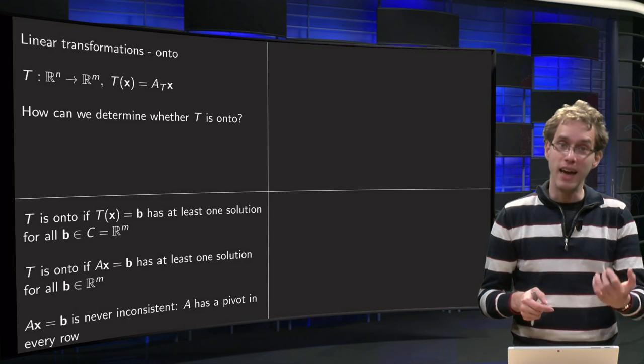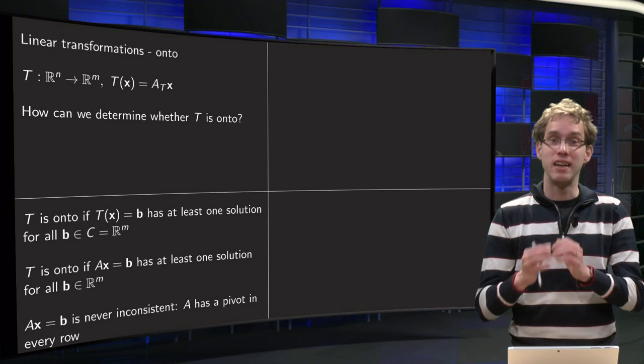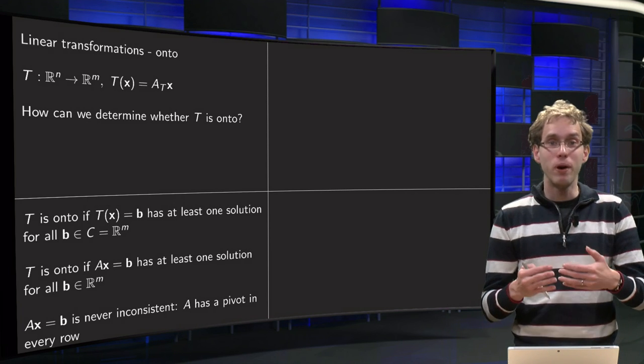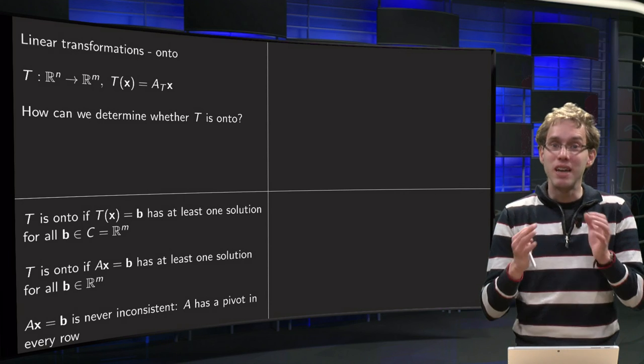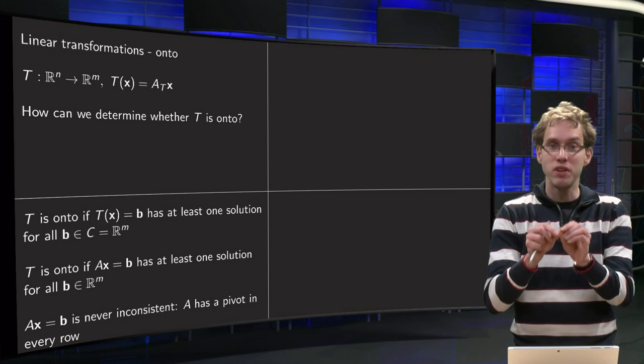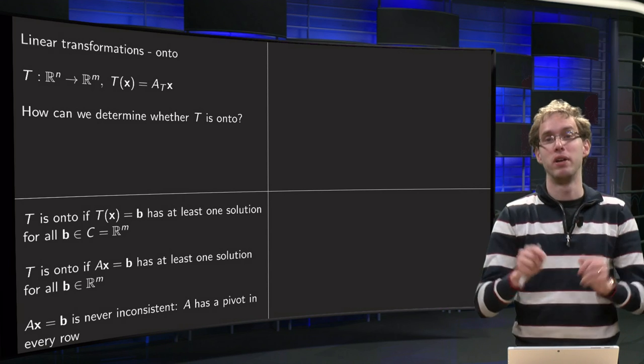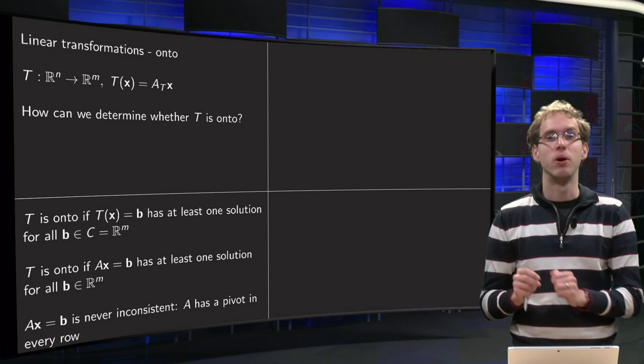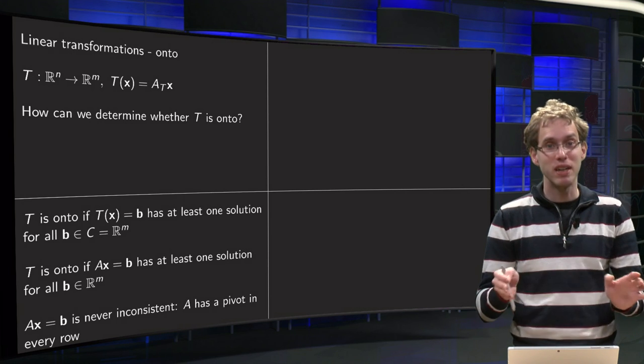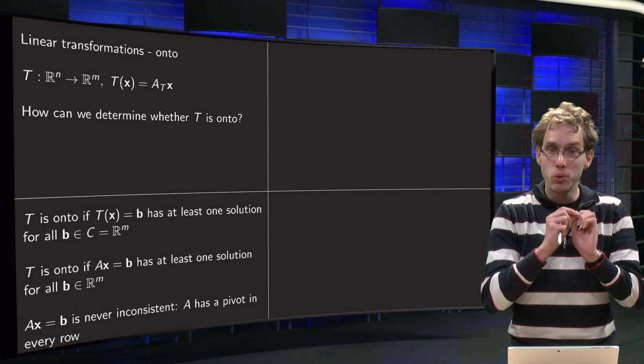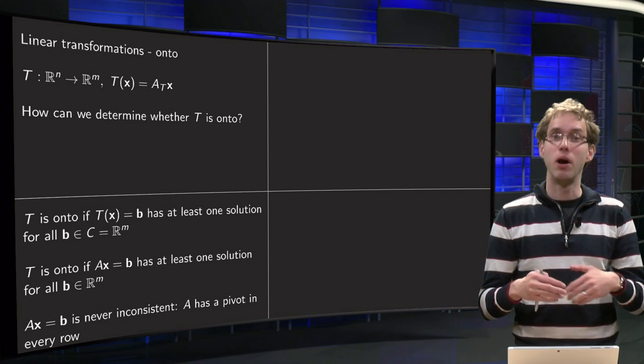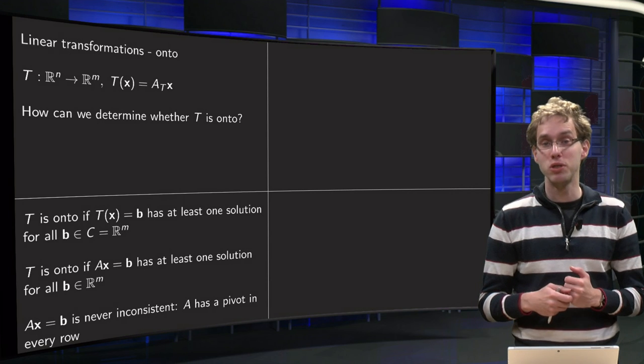So that means that Ax equals b can never be inconsistent. So when does this happen, when can you never have an inconsistent equation? Well, you can only have inconsistent equations if you have rows of zero in your matrix with something on the right hand side. So an equation becomes never inconsistent if you do not have any rows with zeros in your matrix after reducing it to echelon form.